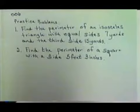Now I'd like you to do some practice problems dealing with perimeter. The first problem says to find the perimeter of an isosceles triangle with equal sides 7 yards and the third side 15 yards. The second problem says find the perimeter of a square with a side 5 feet 3 inches.